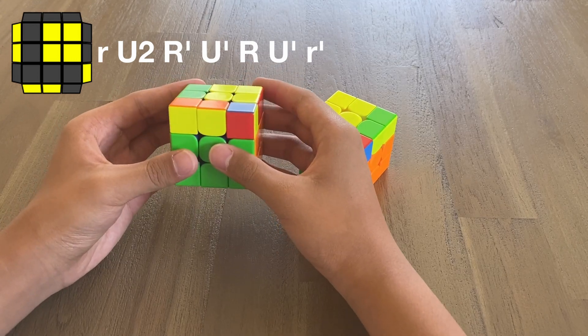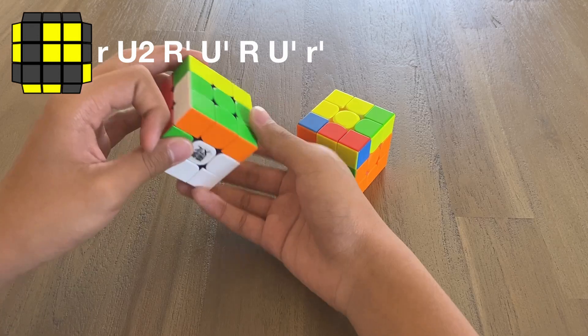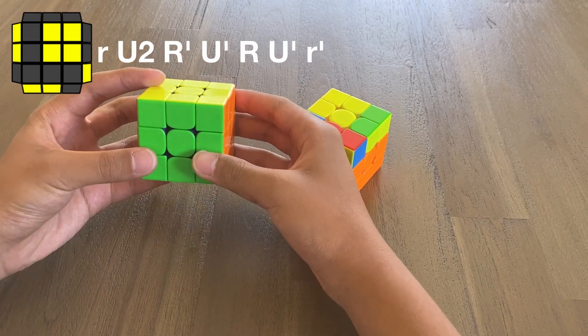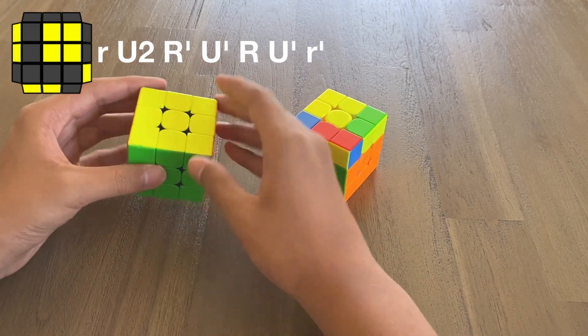So basically, you can execute it like this. Make sure to double flick, like this. It's very similar to the previous algorithm, except, again, we do the opposite because it's anti-sune.